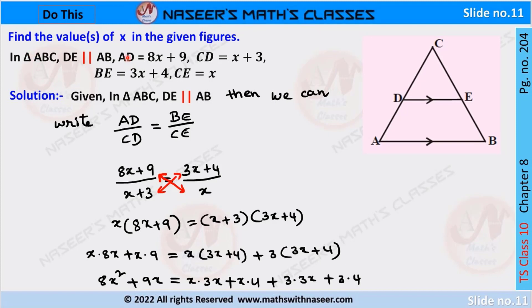Find the value of X in the given figure. In triangle ABC, DE is parallel to AB, and AD, CD, BE, and CE values are given. We have to find the value of X.